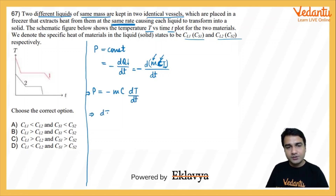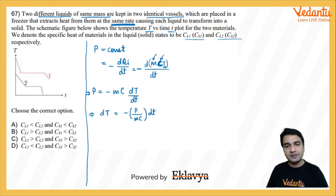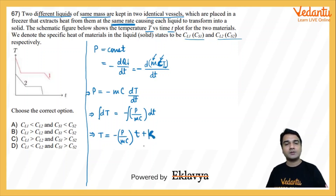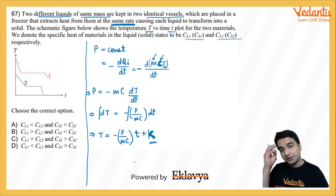Rearranging this equation, we get P divided by M times C equals dT. Upon integration, temperature T can be represented as minus P divided by M times C, multiplied by small t plus K. Here K is the constant of integration — we use K because we are already using symbol C to avoid confusion.